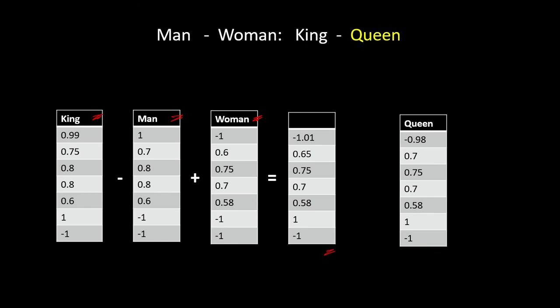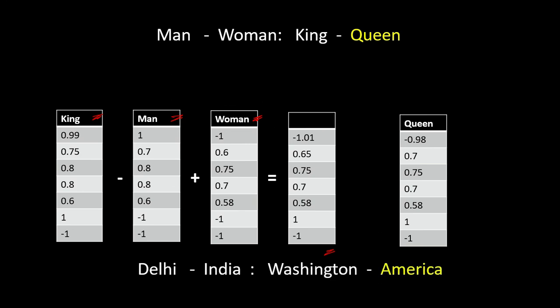Not just this, another analogy can be: if 'Delhi' is to 'India', then 'Washington' is to what? Then our model will say that Washington is to America, because Delhi is the capital of India and Washington is the capital of America. With the help of word embeddings, all this is possible and the model can predict such analogies.